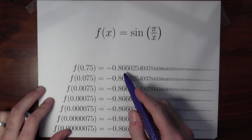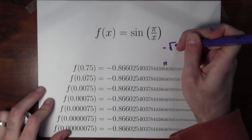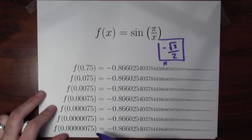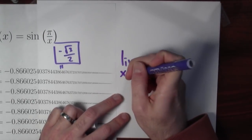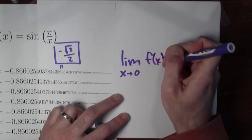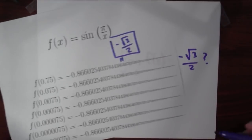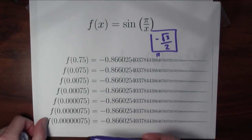Well, what is this number? 0.8666, this isn't just some sort of random number. This is, in fact, negative the square root of 3 over 2. And it looks like this function at all of these points has the same value, negative the square root of 3 over 2. So does that mean that the limit as x approaches 0 of f(x) is equal to negative the square root of 3 over 2? All of these values, 0.75, 0.075, 0.0075, these input values are approaching 0, and the function's value at all of those inputs is the same. So what gives? Is the limit 0? Is it negative 0.8? Which is it?